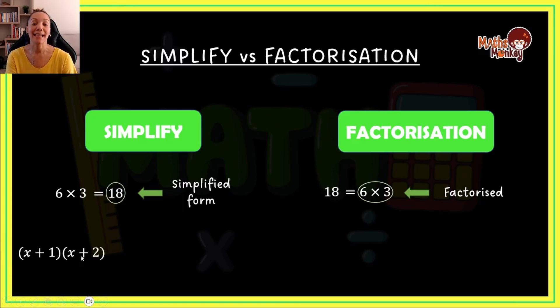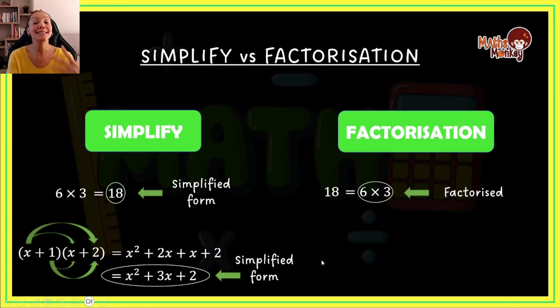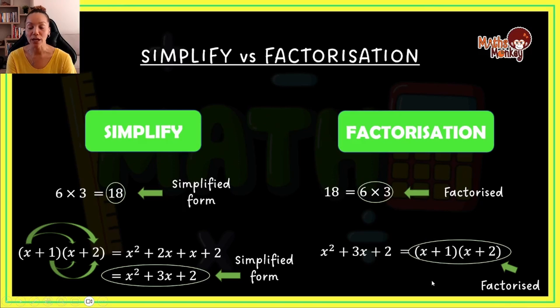If I have x plus 1 times x plus 2, we use our arrow method to simplify and that will give us x squared plus 2x plus x plus 2 and that will then give us x squared plus 3x plus 2. So this is your simplified form. But what I'm going to teach you in this lesson is how to take the simplified form and factorize it back into these two factors. When you are being asked to simplify a question in a test, that means they want you to find the answer and get rid of all the brackets. But if they ask you to factorize, they want you to take the expression and put it in its factors.